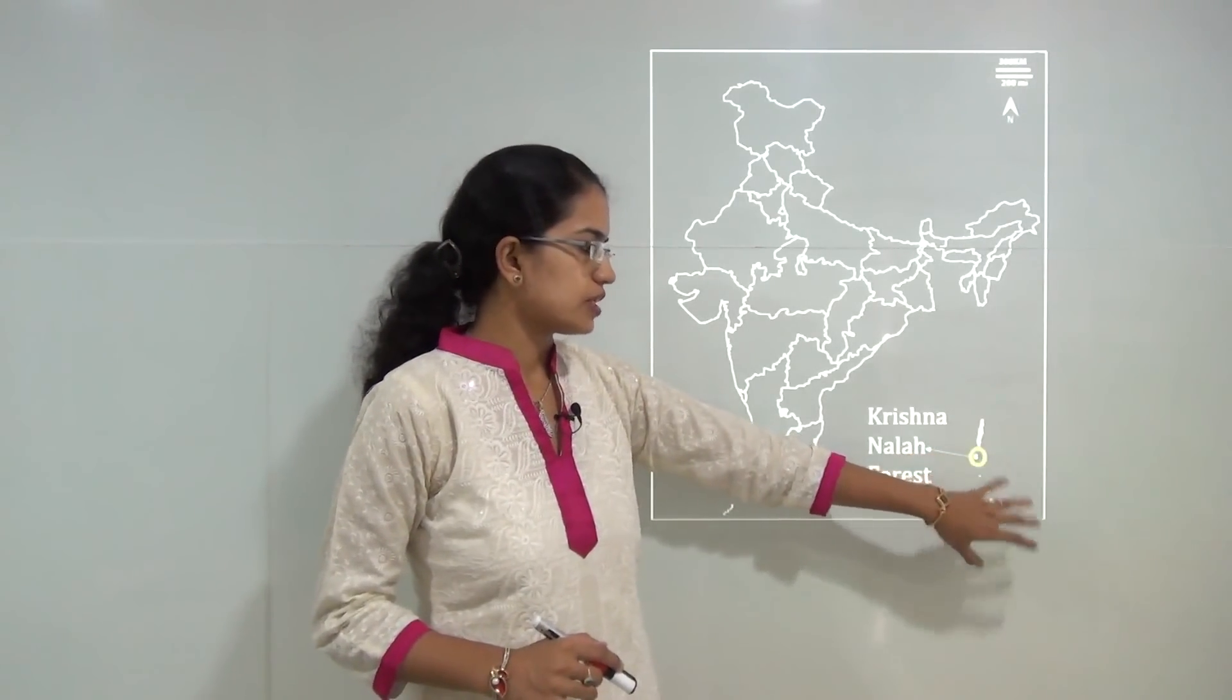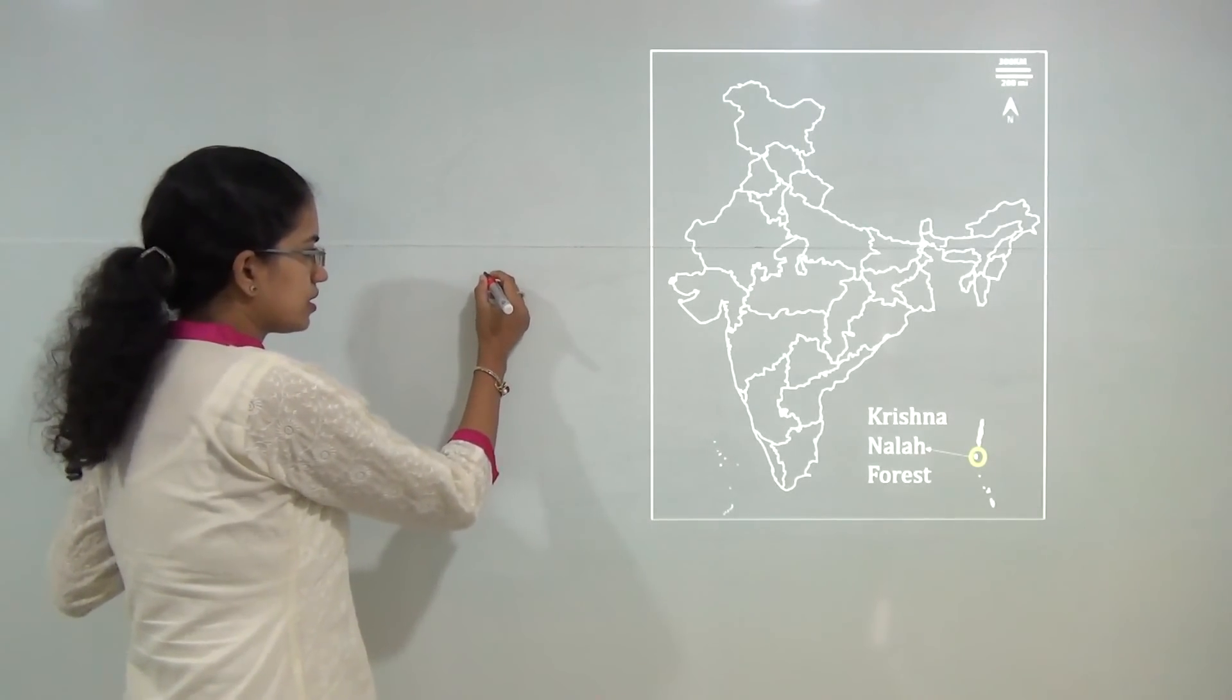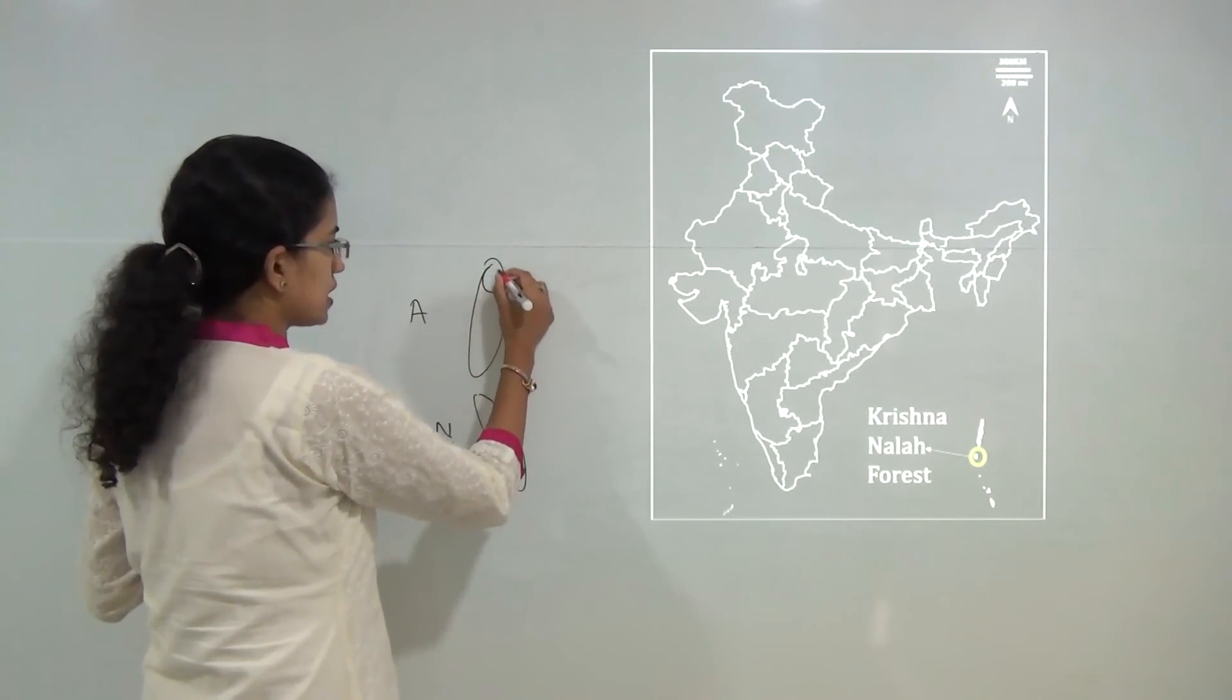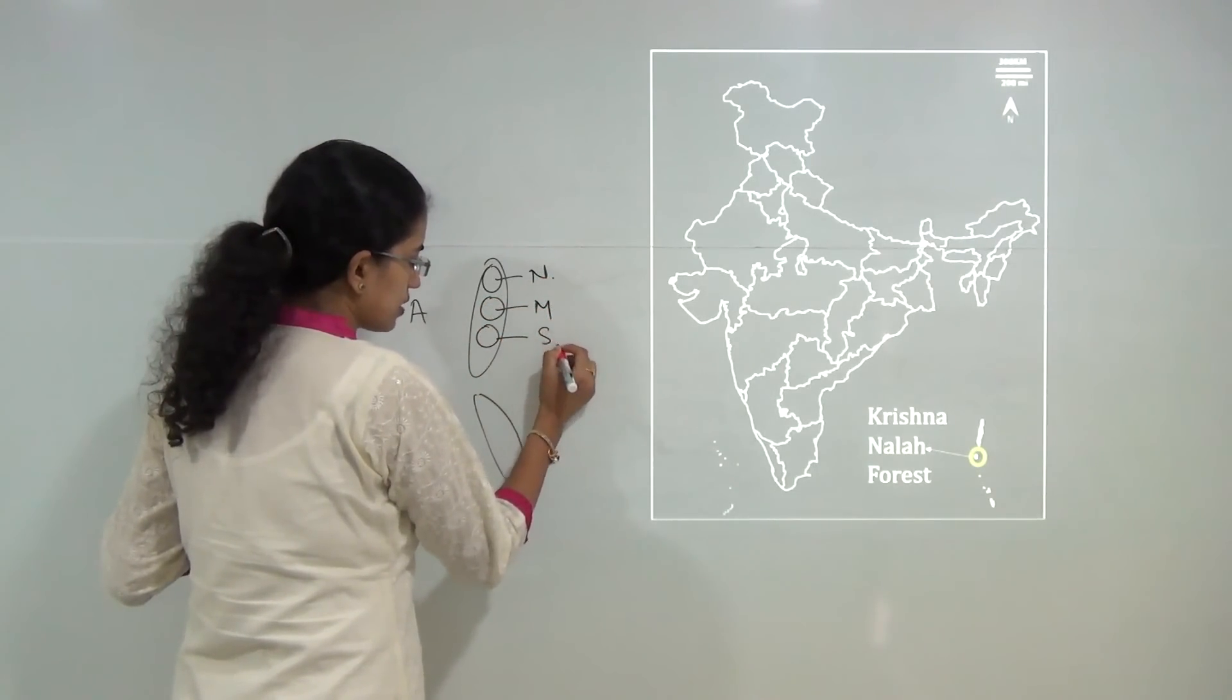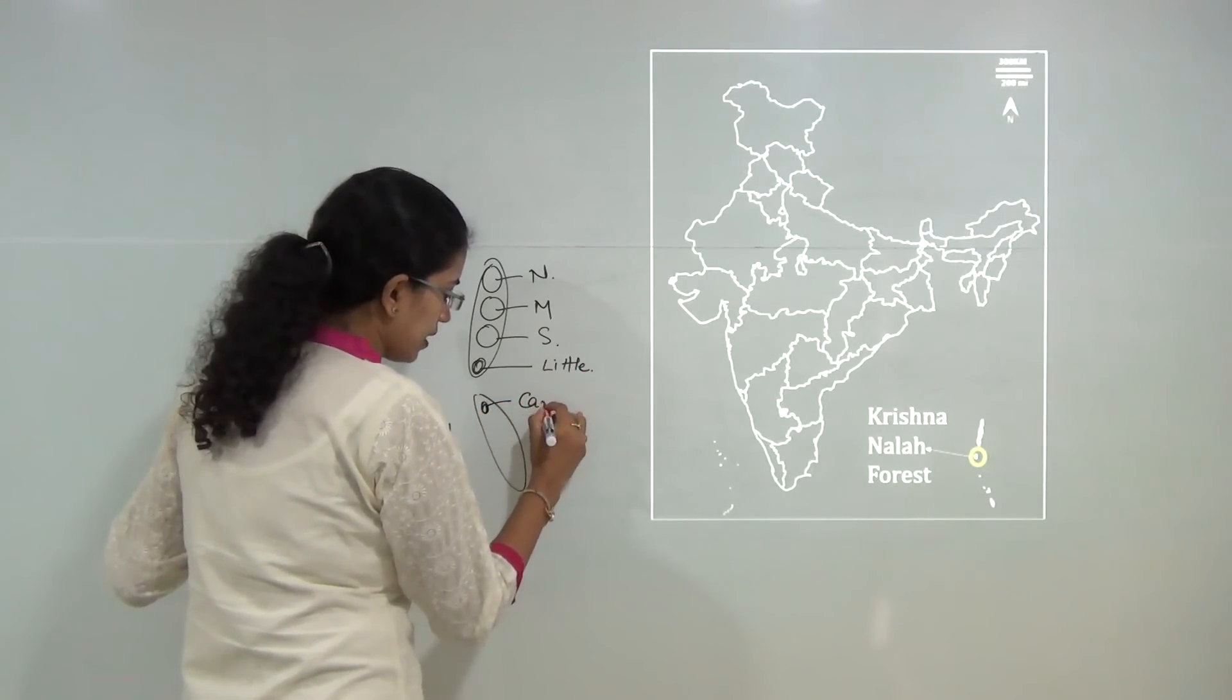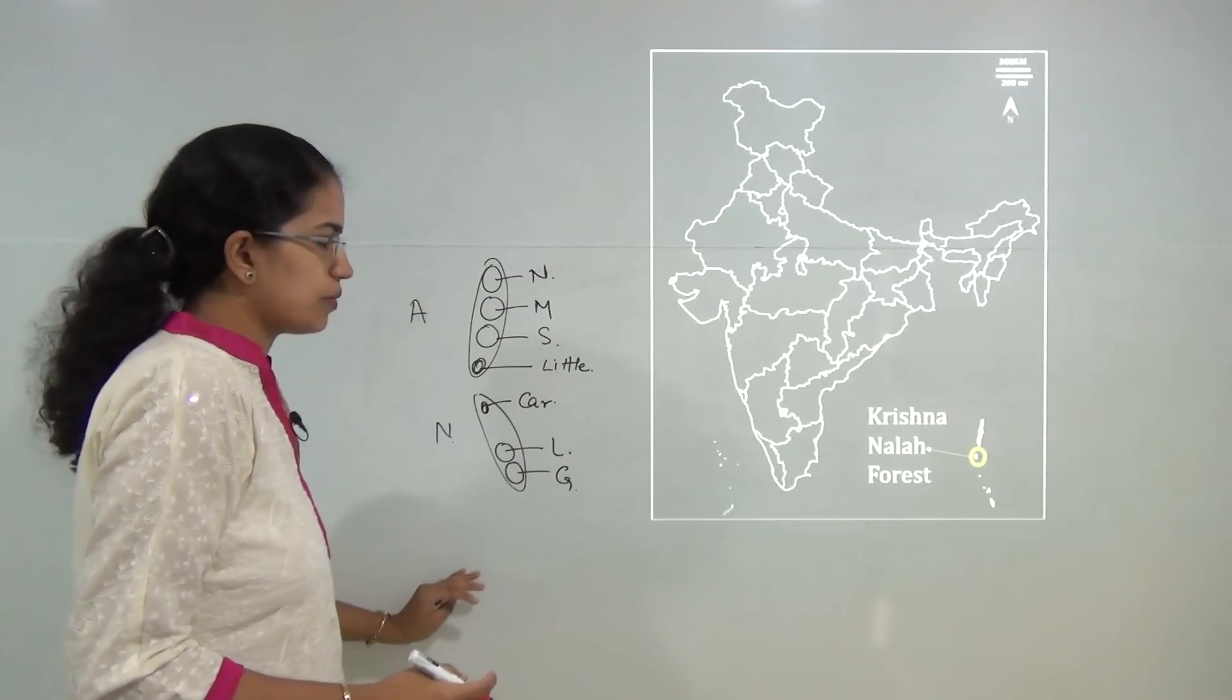Next is Krishnanala Forest. Before we understand this, let's understand the structure of Andaman and Nicobar Islands. Under Andaman and Nicobar Island group, you would have the Andaman group and the Nicobar group. In Andaman group, you would start with North Andaman, Middle Andaman, South Andaman, and then finally Little Andaman. Then in Nicobar you would have Little Nicobar and finally Great Nicobar. These are the major island groups of Andaman and Nicobar.